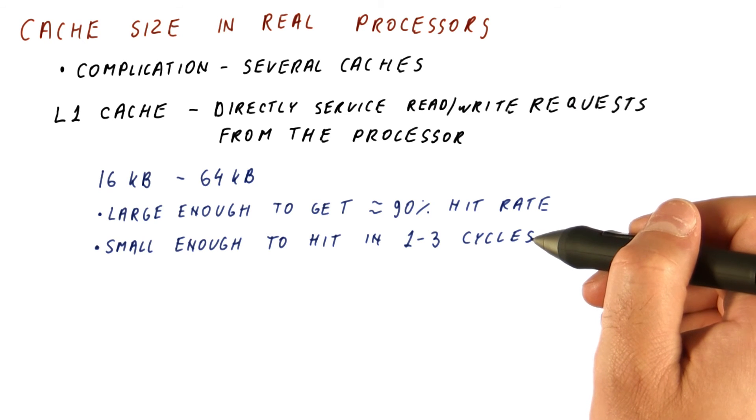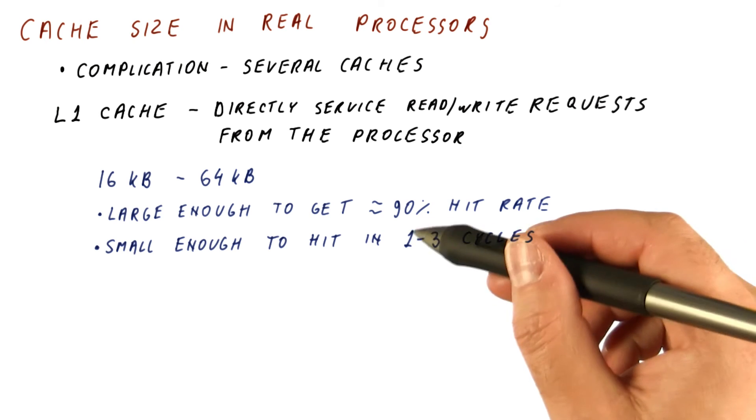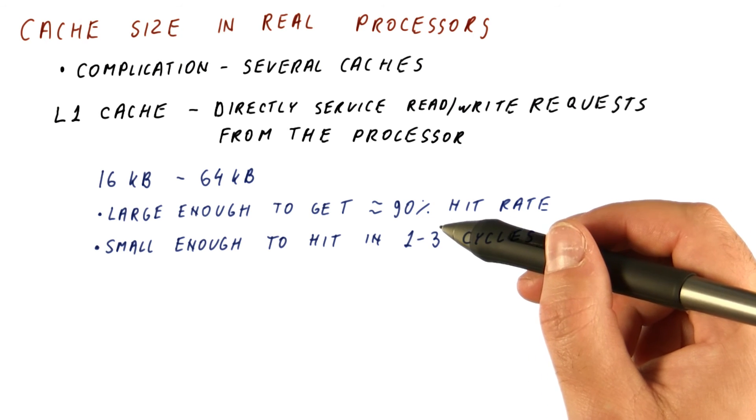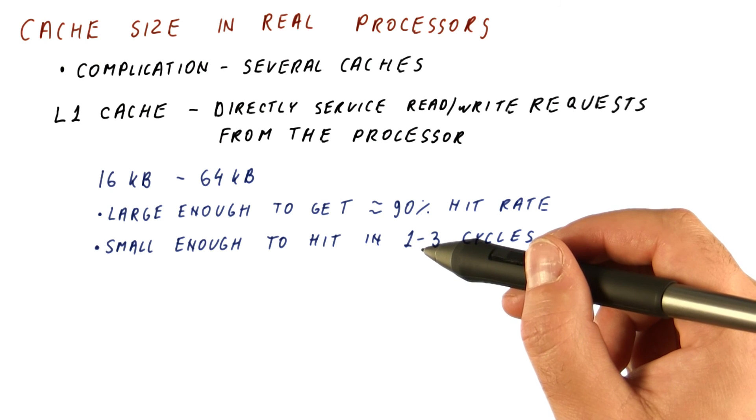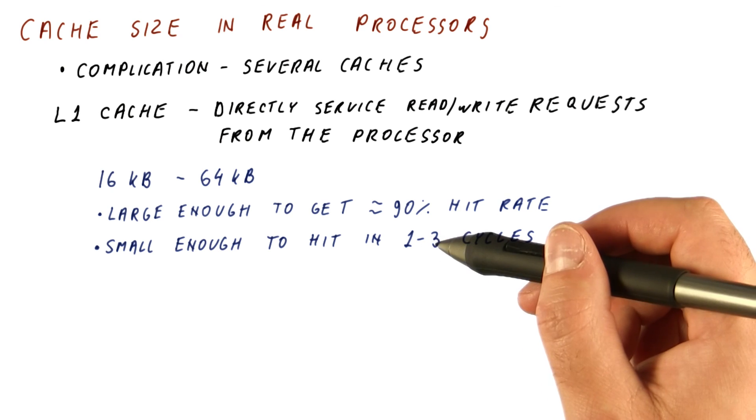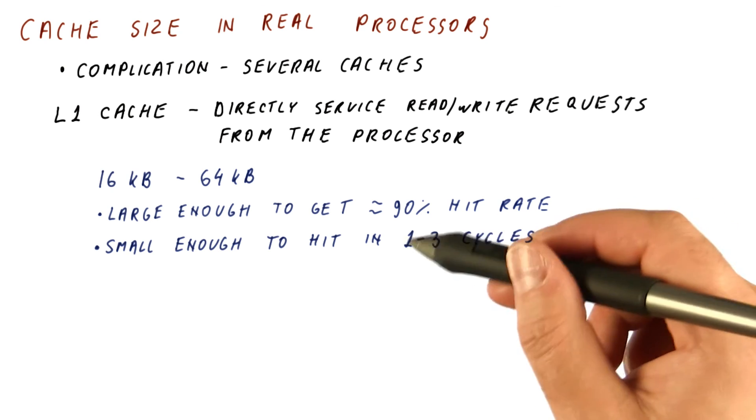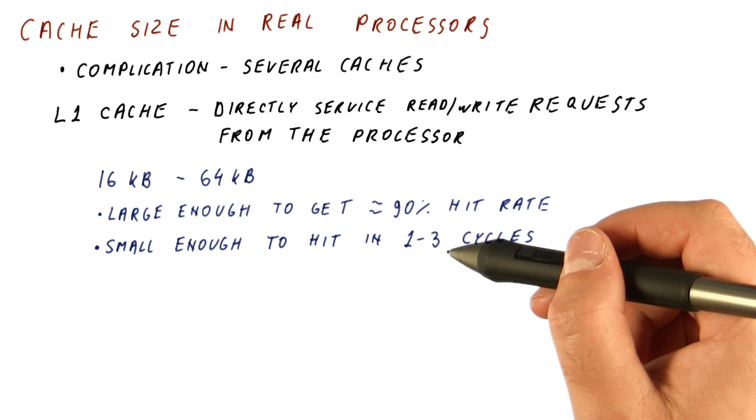Yet these are still small enough to have the hit time that is equal to one to three processor cycles. So we spend very few processor cycles waiting for the data to come back from this cache if it's a hit. Recall that memories have hundreds of cycles, so this is very fast compared to the memory.